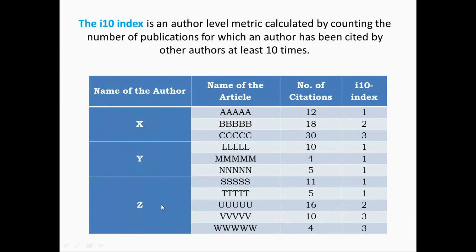For author Z, his first paper S has citations above 10 — I-10 index is 1. His second paper T has only 5 citations — no change, I-10 index remains 1. His third paper U has 16 citations, so the I-10 index increases to 2. His fourth paper V has 10 citations, so the I-10 index increases again to 3. His fifth paper W has only 4 citations, so there is no change. Finally, the I-10 index of author Z is 3, meaning 3 of his publications have more than 10 citations.